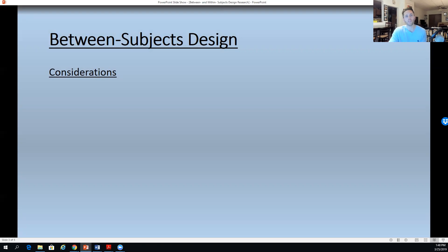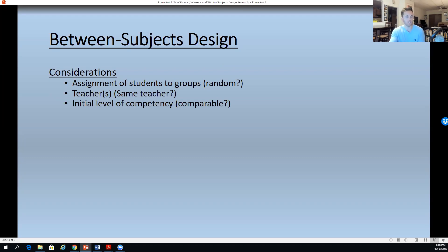Some of the considerations that we want to think about when engaging in between-subjects design research is, number one, do we have a random assignment of students to the groups? Was it just by chance? Did somebody select the participants in their group that they wanted most, or was it more of a randomized sample? Are the teachers the same teacher across every group? The more that we think about these considerations and try to minimize the difference, the better results we'll have at the end to actually measure the variable we care about.